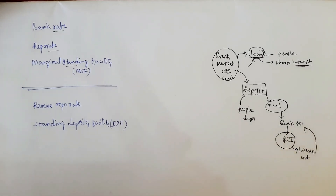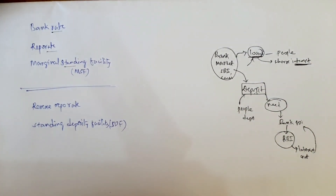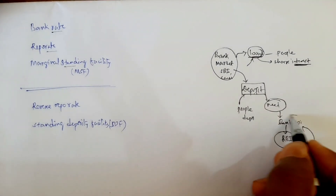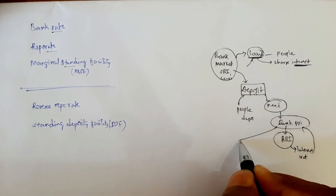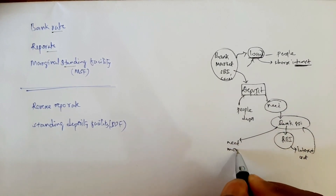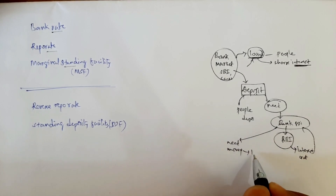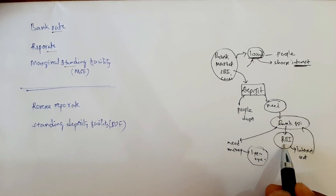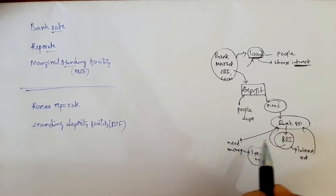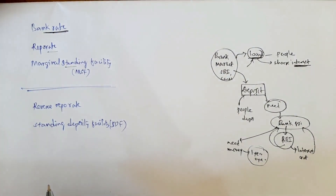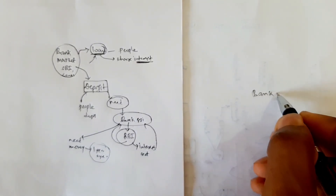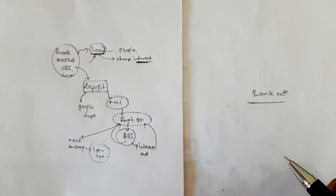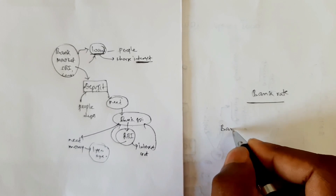What is bank rate? If the bank needs money for the long term — for example, one year, two years, three years, or even 30 years — if the bank needs money on a long-term basis, the RBI lends to this bank under the bank rate. RBI provides the loan under the bank rate.